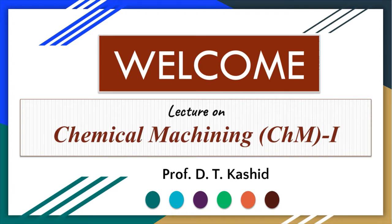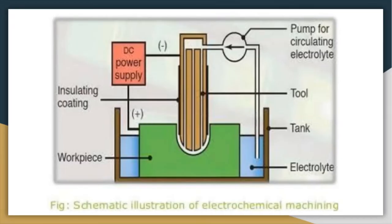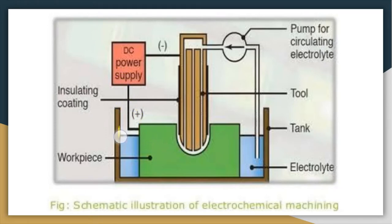In electrochemical machining, we have a tool and a work piece, as shown in this figure. The positive terminal of the DC power supply is connected to the work piece, and the negative terminal is connected to the tool.